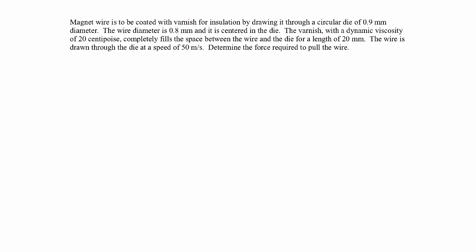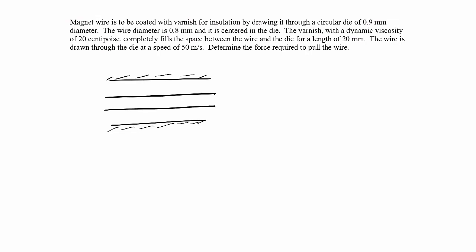Let's sketch this out so we can visually see what's happening. Here I'm sketching the die, and then the wire will be in here — it's a cylindrical wire being pulled at some velocity with a force F. All inside this region is the varnish. We'll put a centerline: the radius out to the wire surface is r sub i for inner radius, the radius out to the die is r sub o for outer radius, and the whole thing has a length L.